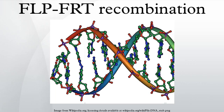In genetics, FLP-FRT recombination is a site-directed recombination technology, increasingly used to manipulate an organism's DNA under controlled conditions in vivo.